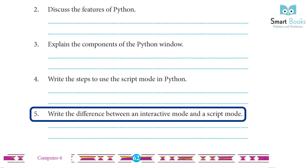Difference between interactive mode and script mode: Script mode is where you put a bunch of commands into a file — a script — and then tell Python to run the file.